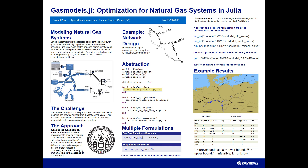This work is motivated by the observation that critical infrastructure is a lifeblood of modern society. This includes power grids that transport electricity, pipelines that transport natural gas, petroleum and water, and cables that transport communication and information. Specifically, natural gas is used to heat homes, run industrial processes, and generate electricity.